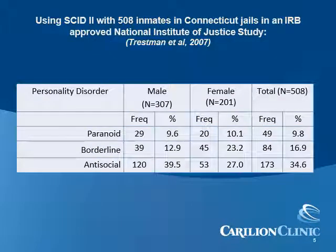The data here is from a study published in 2007 which used the SCID, a structured clinical interview that allows for diagnosis of DSM psychiatric disorders, with inmates. The results are broken down by sex and diagnosed personality disorder. As you can see, the rates of these specific disorders in correctional settings are high. Therefore, offering treatment that focuses on helping inmates manage impulsivity, aggression, and emotional reactivity has the potential to offer tremendous benefit.